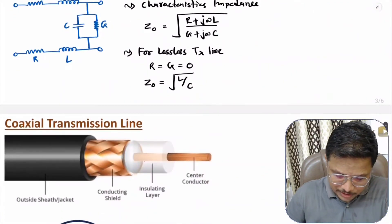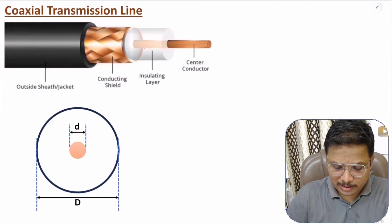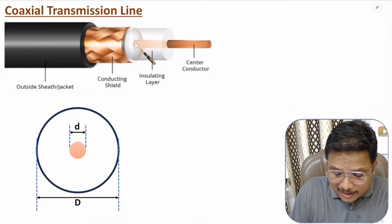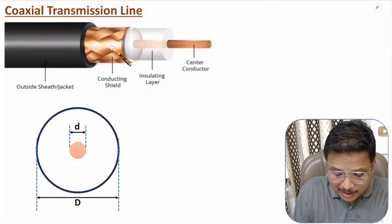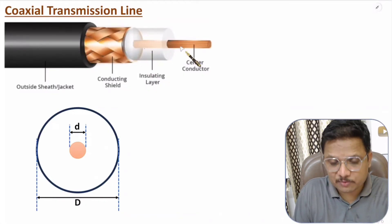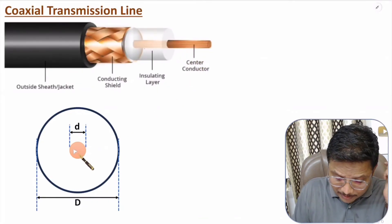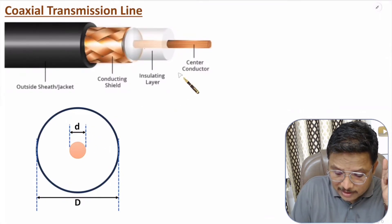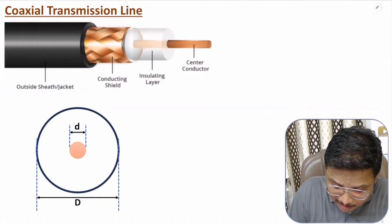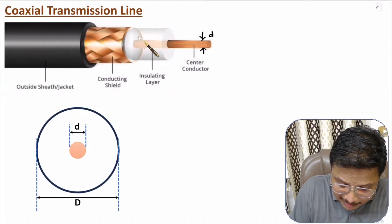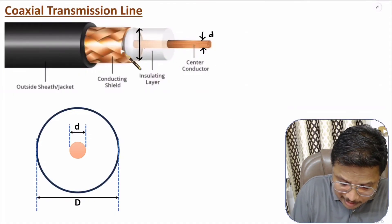Now I will be discussing about the coaxial transmission line. In the coaxial transmission line, we have an inner conductor — the center conductor — and an outer conductor which is the conducting shield. These two conductors are separated by an insulating layer, and there is a jacket to provide protection. The diameter of the center conductor is small d, and the diameter of the outer conductor is capital D.